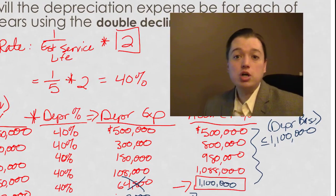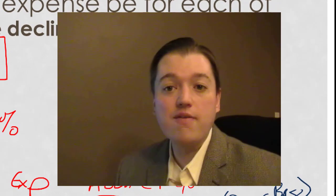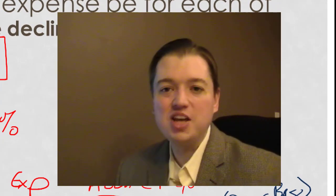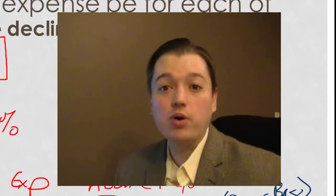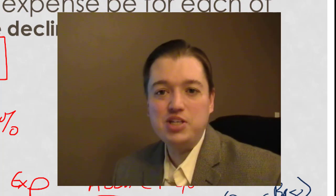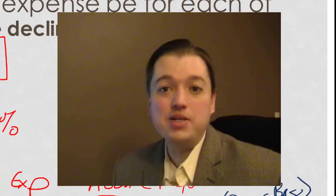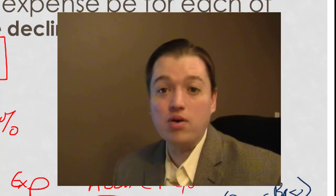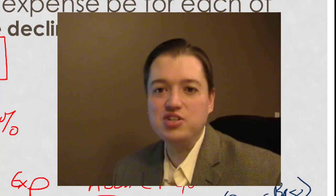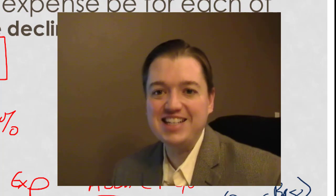Those are our depreciation methods. Hopefully you're comfortable with these basics. When we come back, we're going to start talking about another twist we can add to depreciation — what happens if we don't buy the asset at the beginning of the year? What if we buy it part way through the year? Then things change just a bit. With that preview of coming attractions, I'll see you next time.